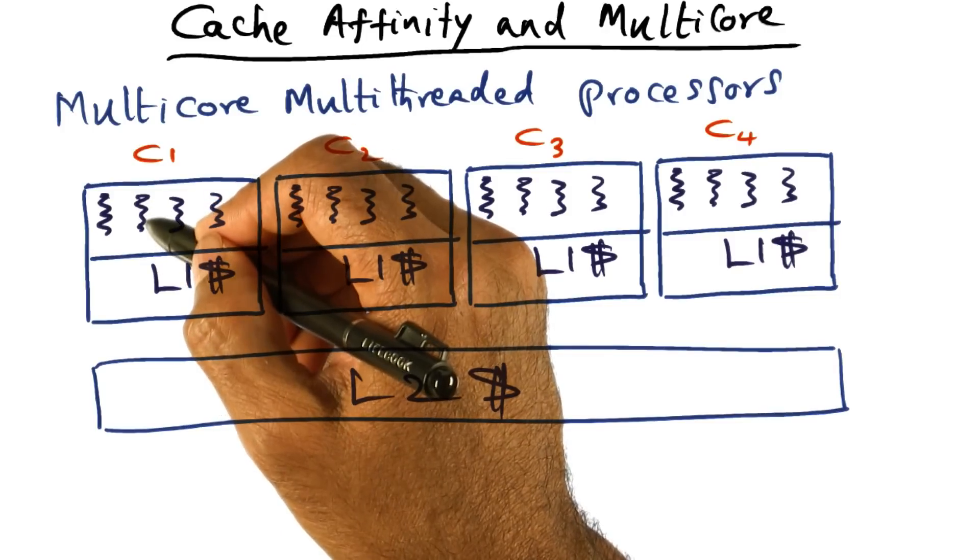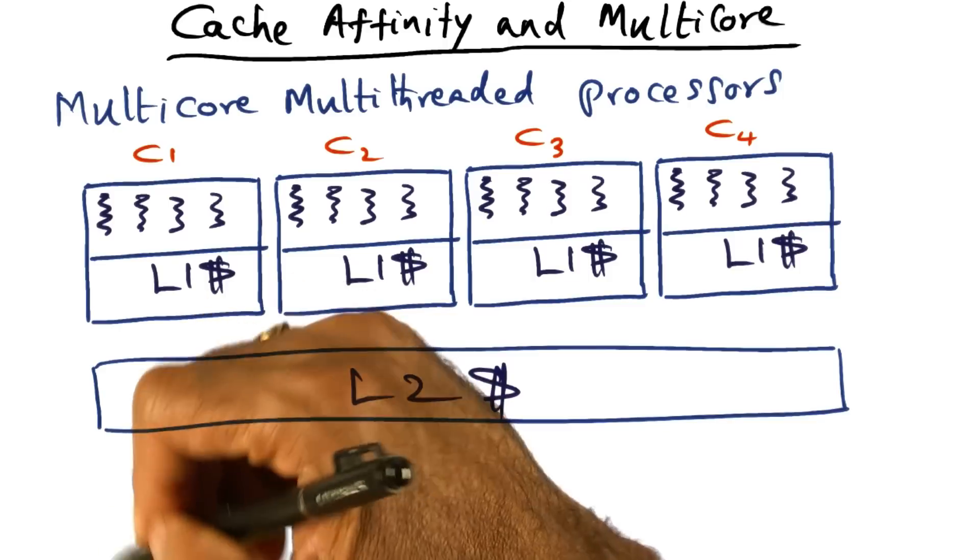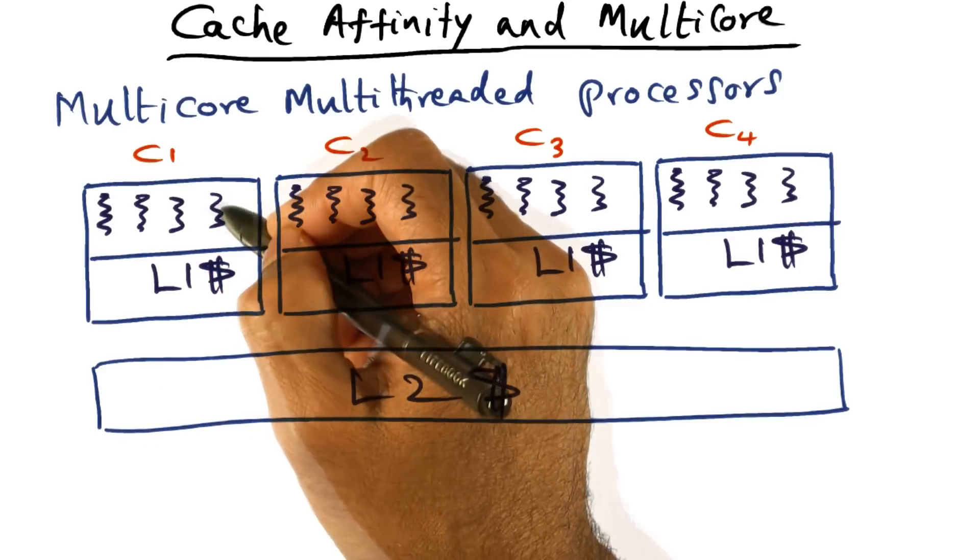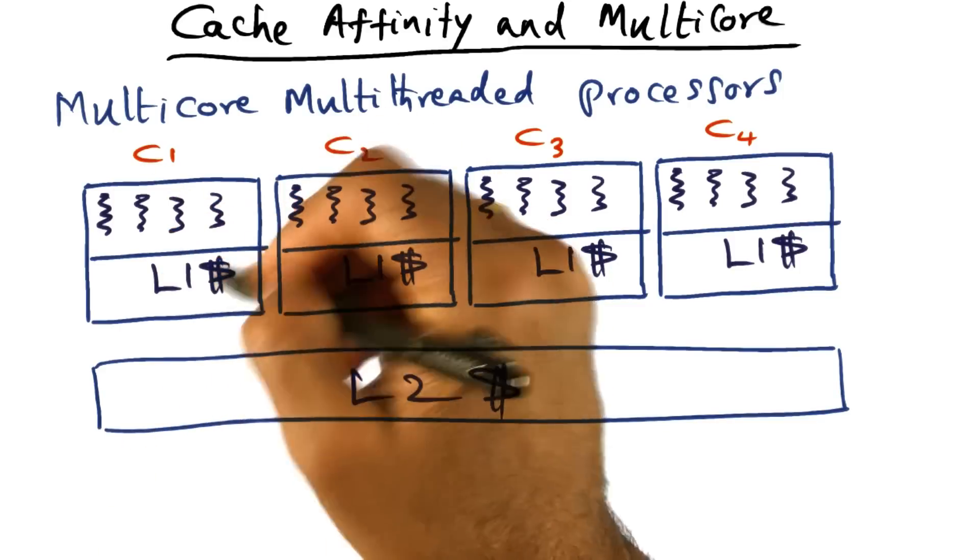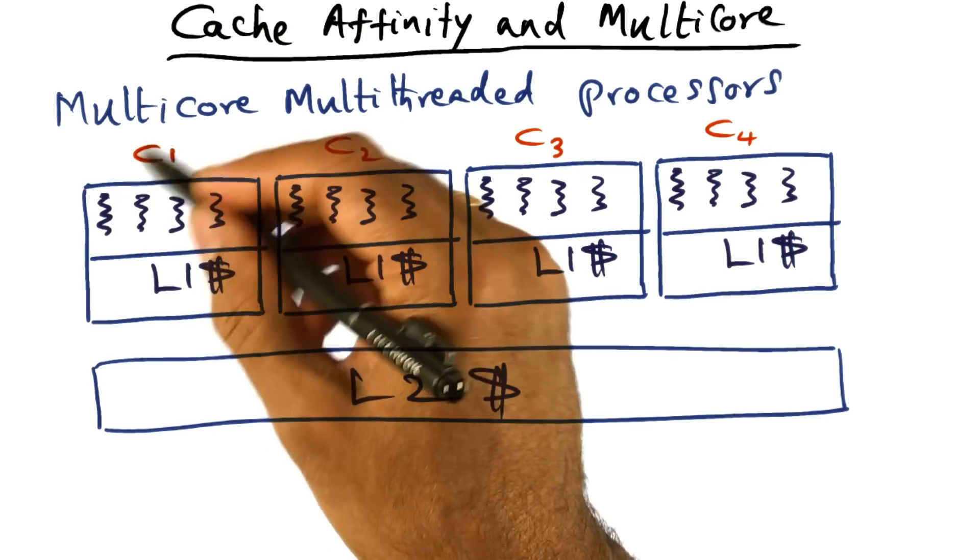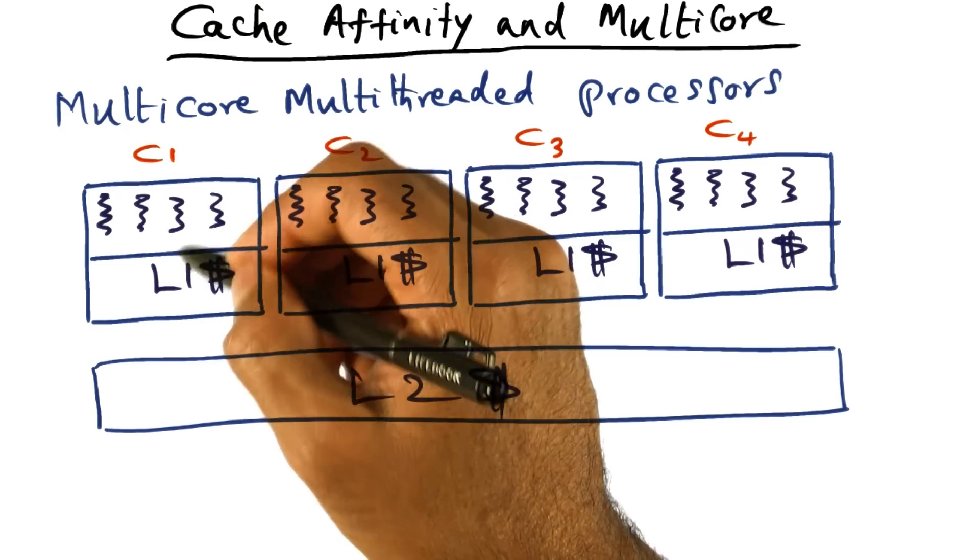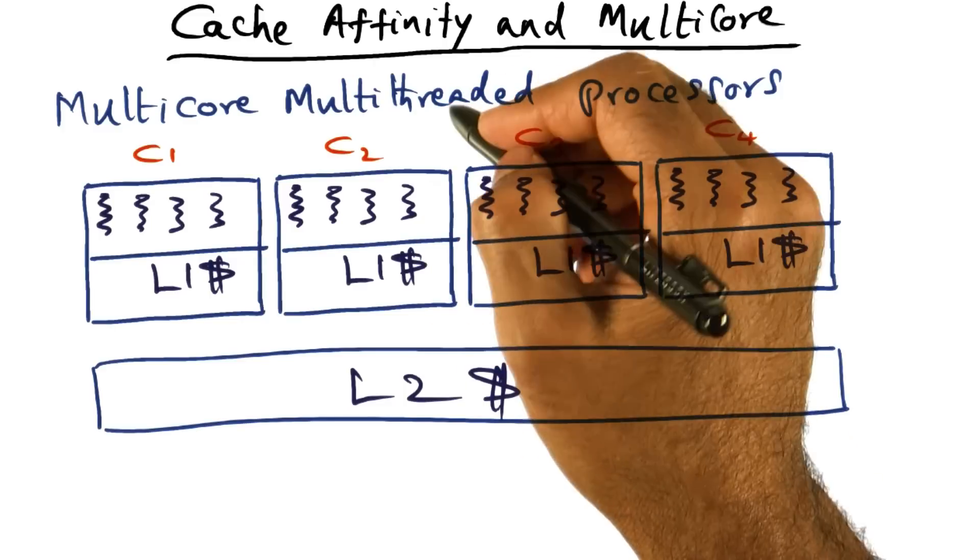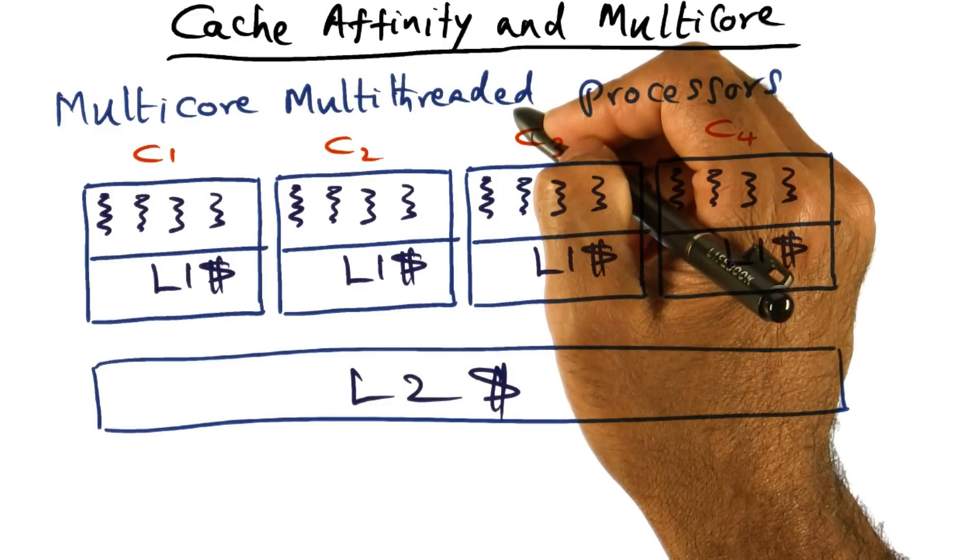And if this guy also makes a long latency operation, like a memory access, then the hardware can switch to this guy, and to this guy. So if all of these guys are waiting on memory, then of course the core is not going to be able to do anything useful till at least one of these memory accesses are complete. So that's the idea behind hardware multi-threading.